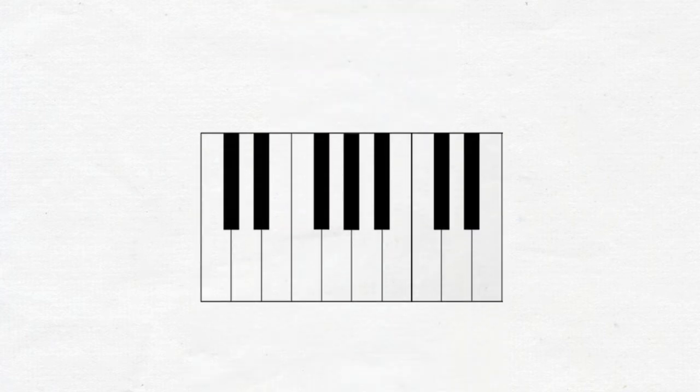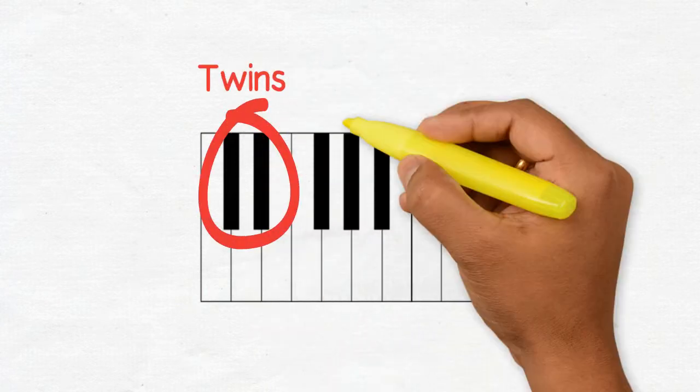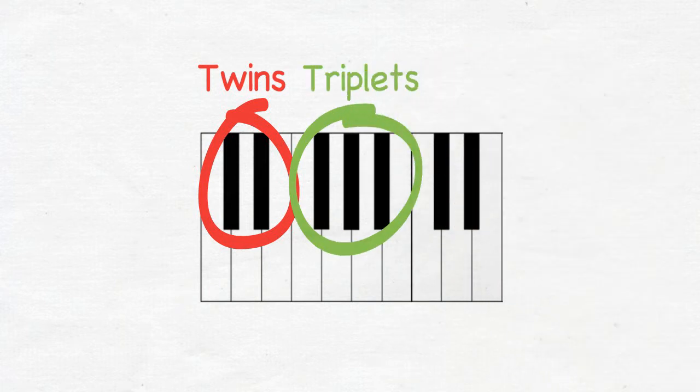These black notes will be your helpers to find all the piano notes. Think of them as your road signs. You can call the group of two black notes the twins and the group of three black notes the triplets.